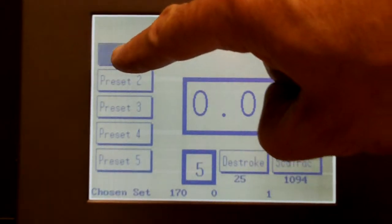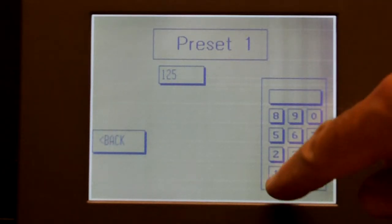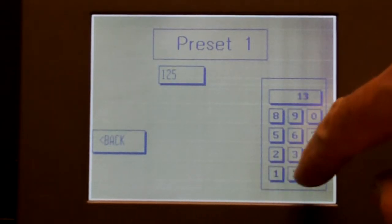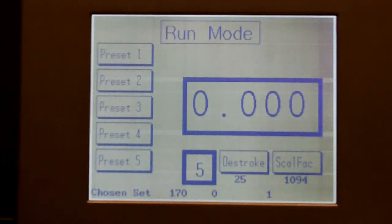When the operator selects a preset, a new menu pops up that has a small keypad built in. A new setting can be entered just by pressing the numbers on the keypad and pressing enter, and then pressing back to go to the main screen.